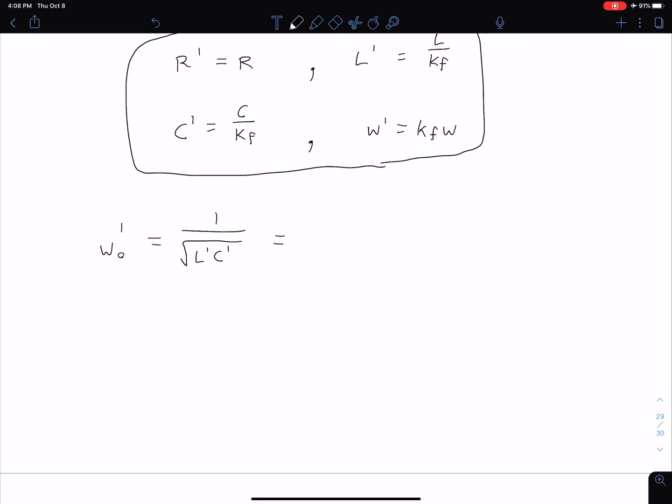Plugging in the equations for L' and C', we have 1 over the square root of L divided by kf times C divided by kf. This equals kf divided by the square root of LC.